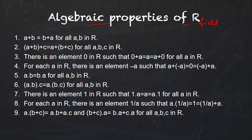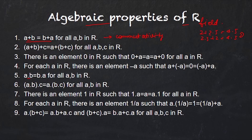There are two operations: plus and dot. The first property of plus is a plus b equals b plus a, known as commutativity. For example, 2 plus 2.5 is 4.5, and 2.5 plus 2 is also 4.5. This is true for any general a, b in R.